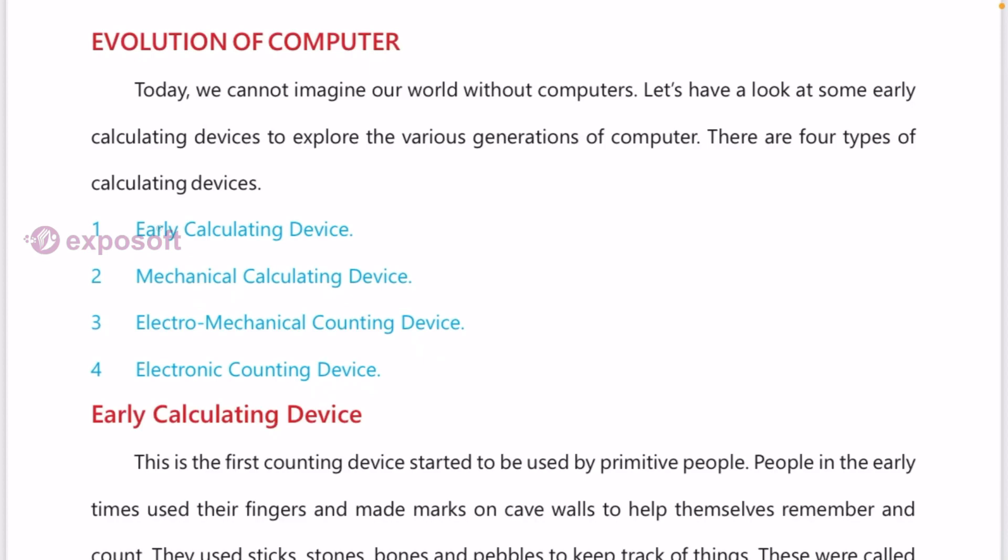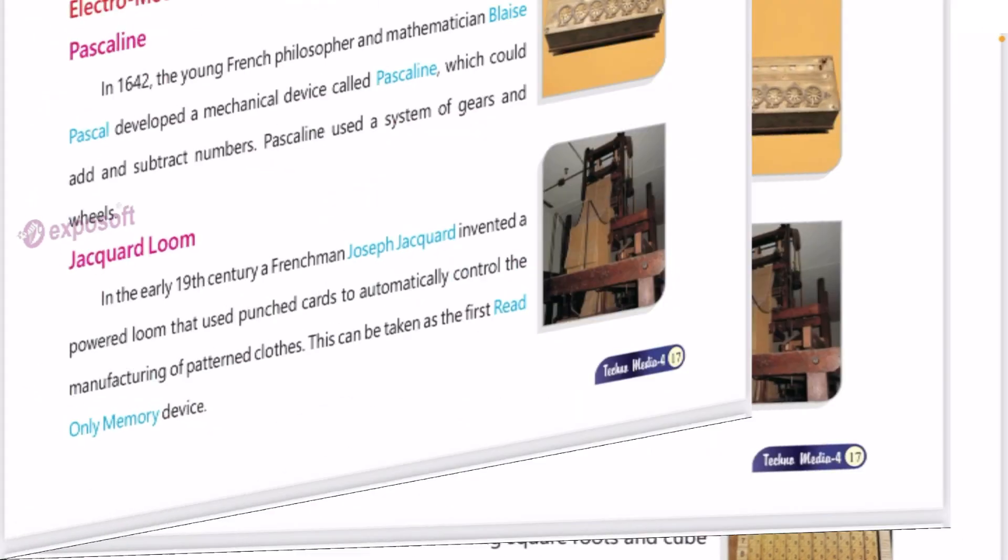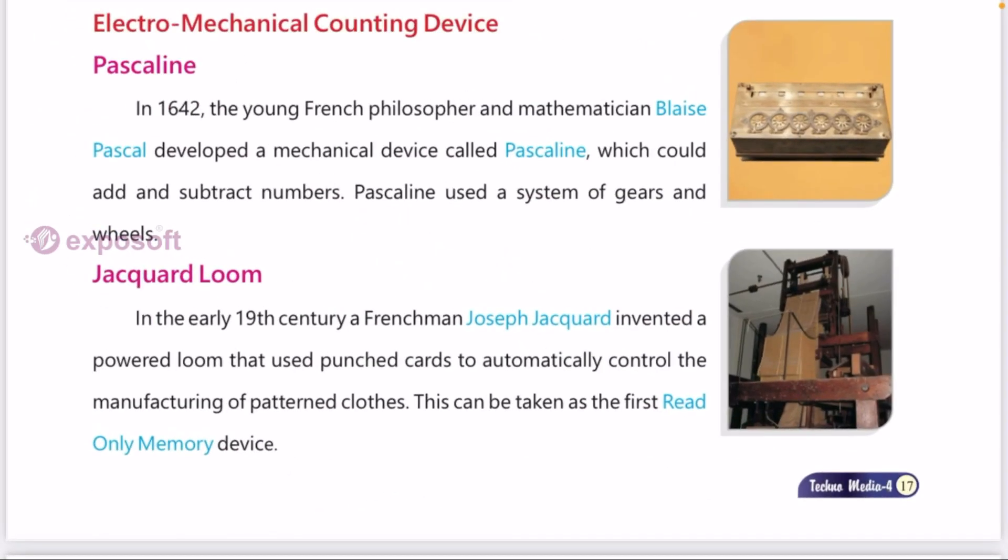Abacus and Napier's bones are two mechanical calculating devices. Pascaline and Jacquard loom are two electromechanical counting devices.